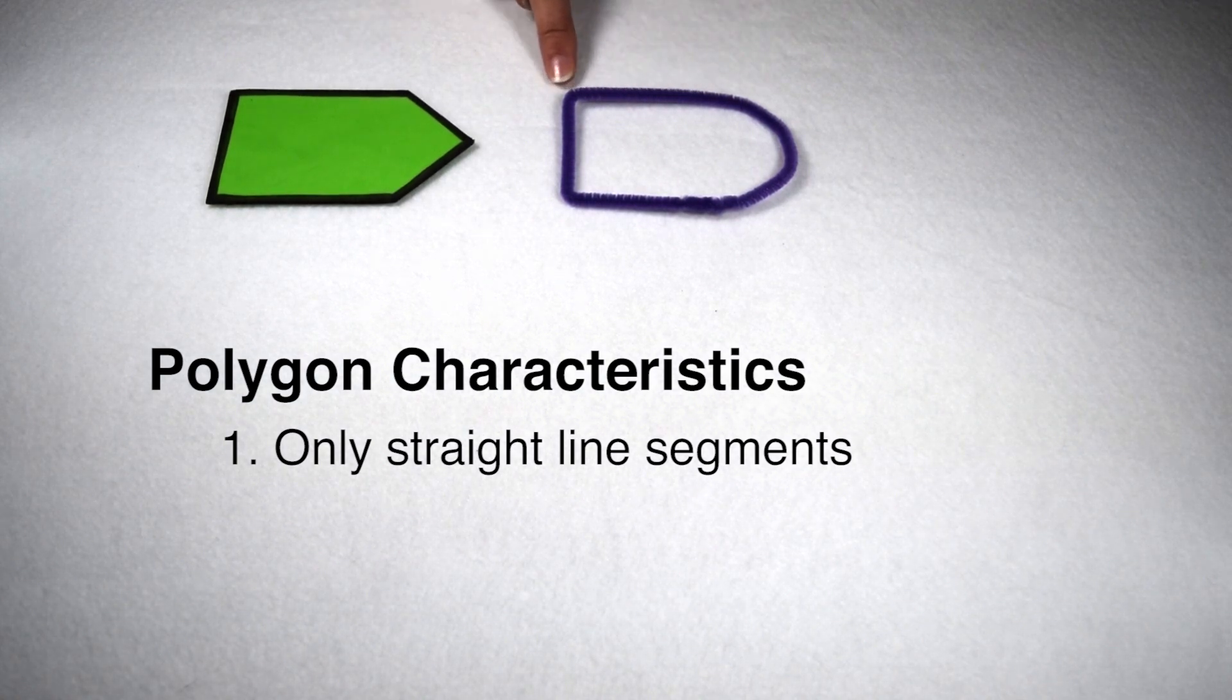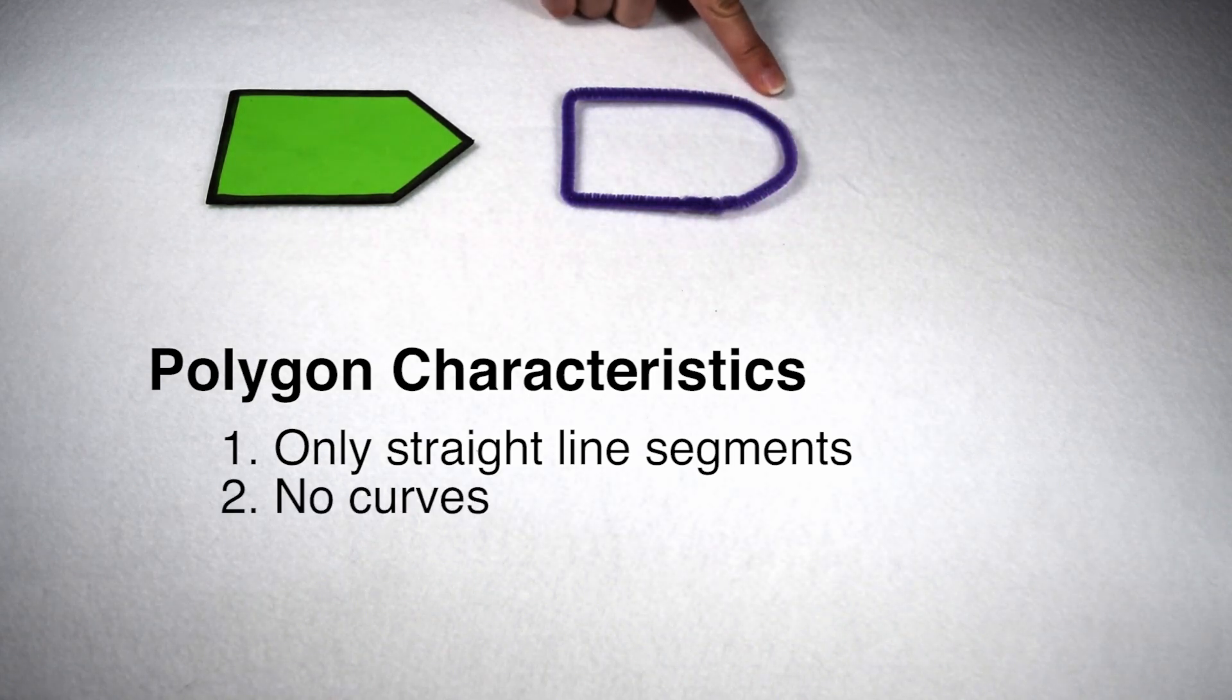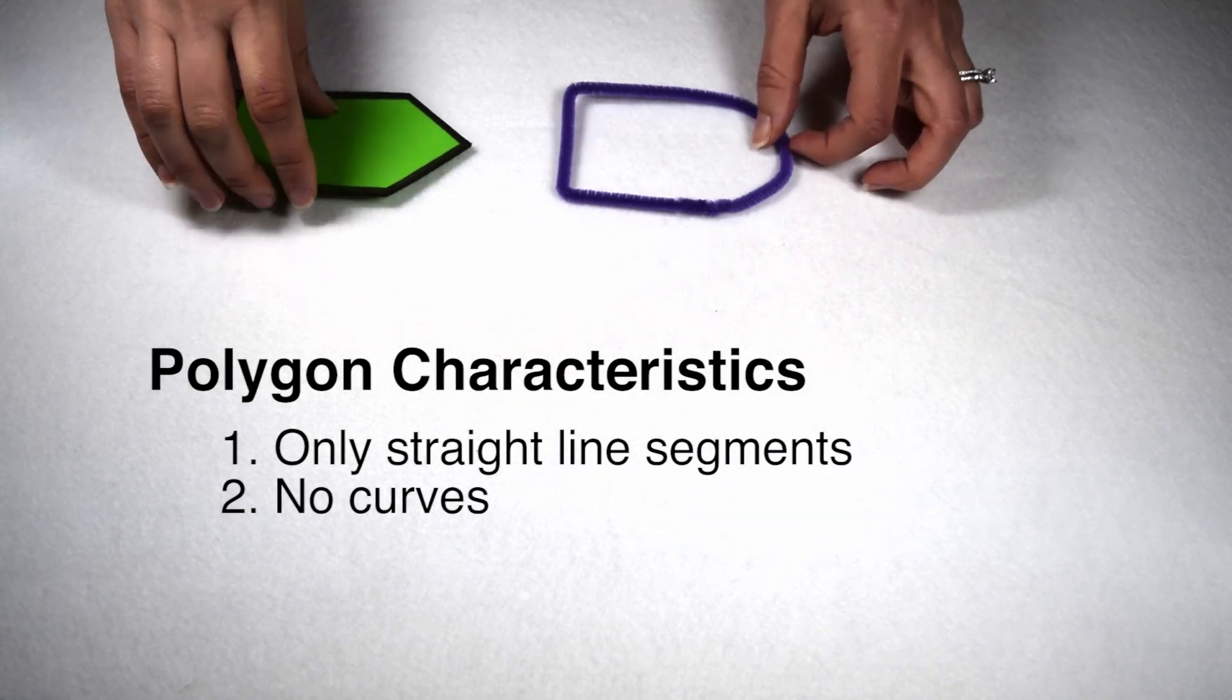Our figure here on the right is made up of some straight edges, but it also has this curved part. Polygons can't have curved edges, which is the biggest reason why a circle is not a polygon.